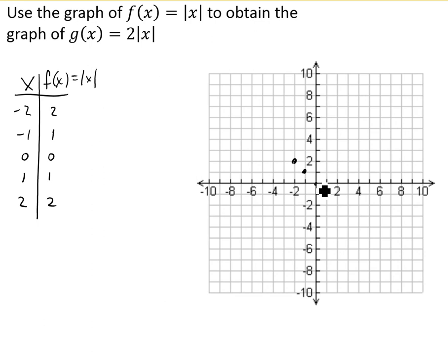And that gives us our absolute value of x function, kind of our starting point or our common function. And now we want to use that to get the graph of g(x) equals 2 times the absolute value of x.